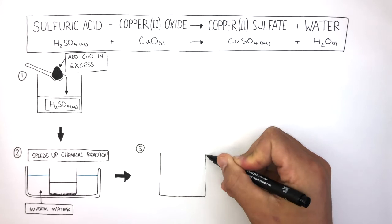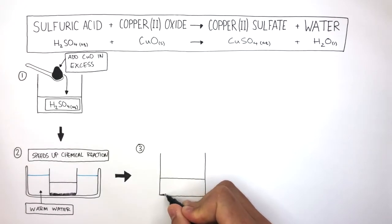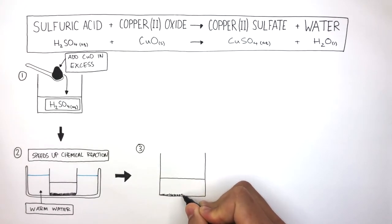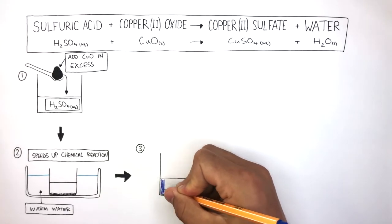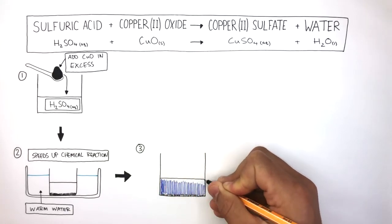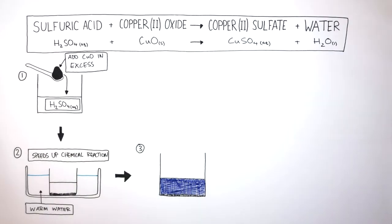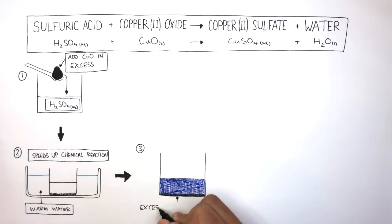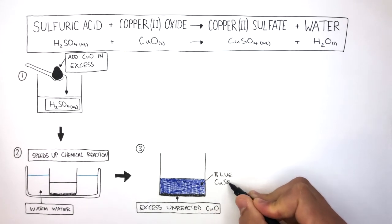Once the reaction is complete, we'll be able to see the excess insoluble copper oxide at the bottom of the beaker, and blue copper sulfate solution will have formed inside the beaker. So at the bottom we have excess unreacted copper oxide, and inside the beaker we have blue copper sulfate solution.